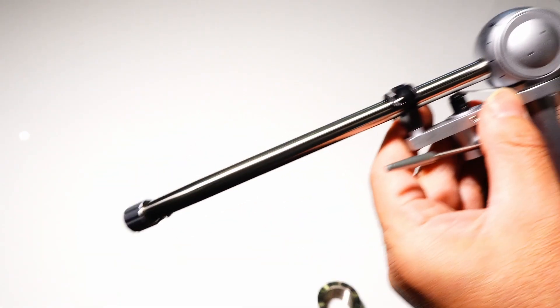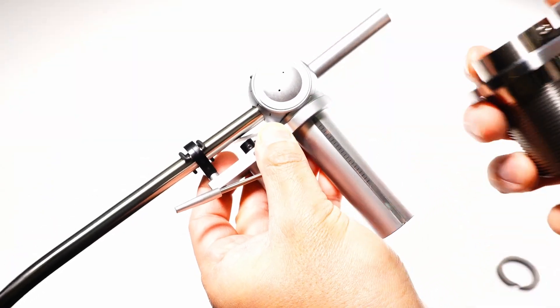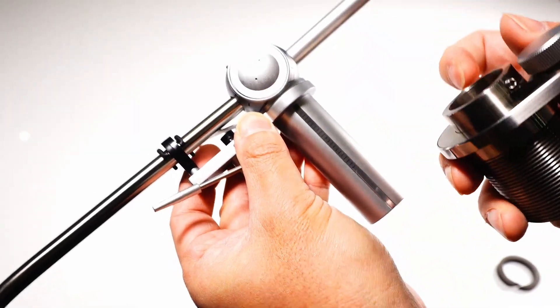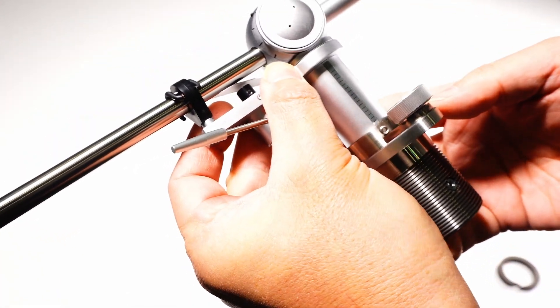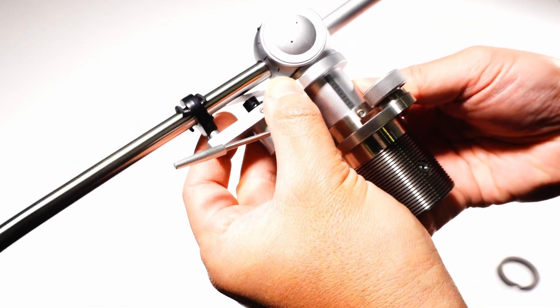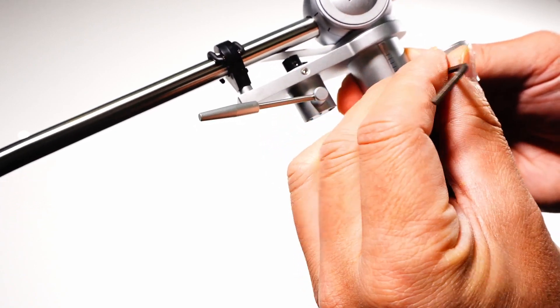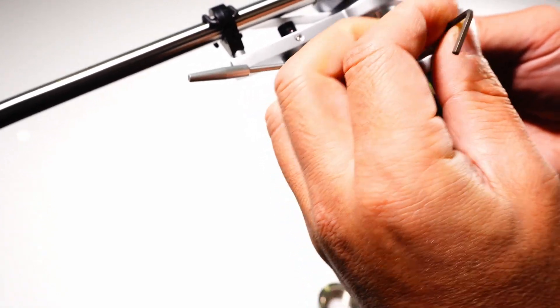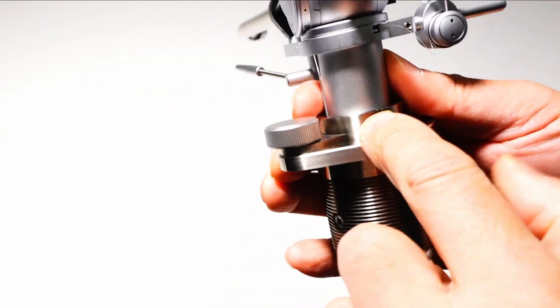This is the tonearm. On the side of the tonearm base shaft, there is a scale. Align the scale to the side screw of the VTA elevator, roughly set the position and screw it in. Fix the tonearm firmly to the VTA base.